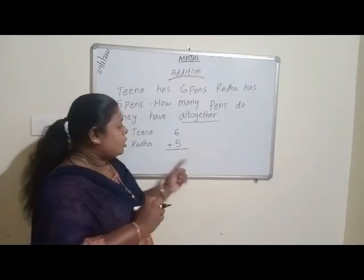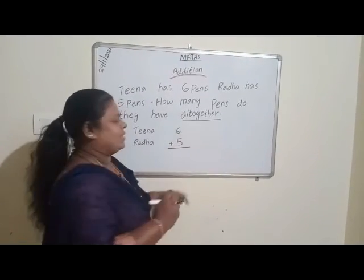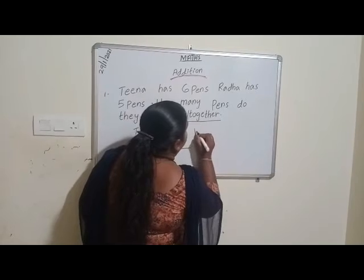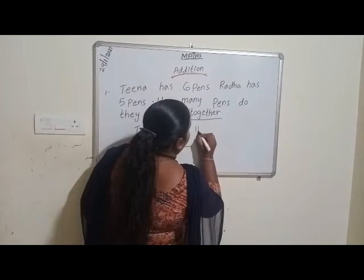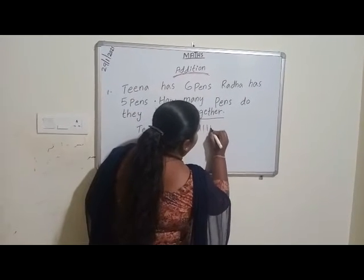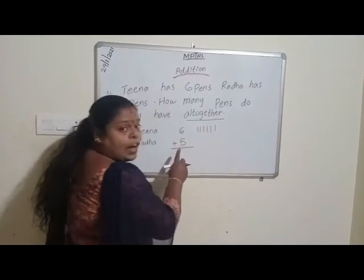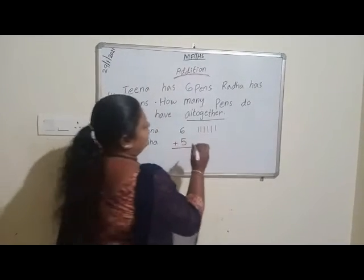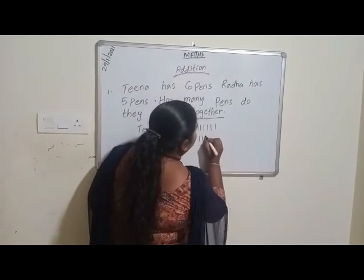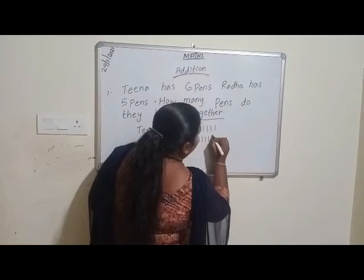Let's draw 6 sticks. 1, 2, 3, 4, 5, 6. And 5 sticks. 1, 2, 3, 4, 5.